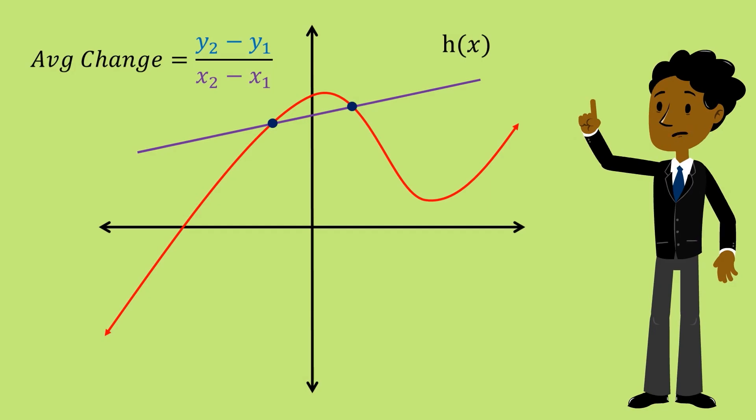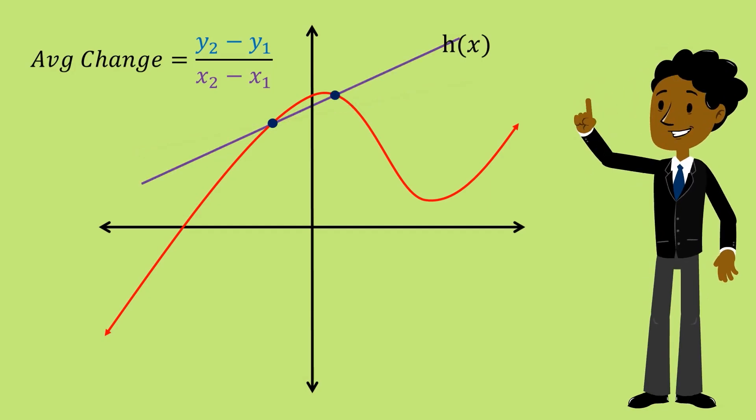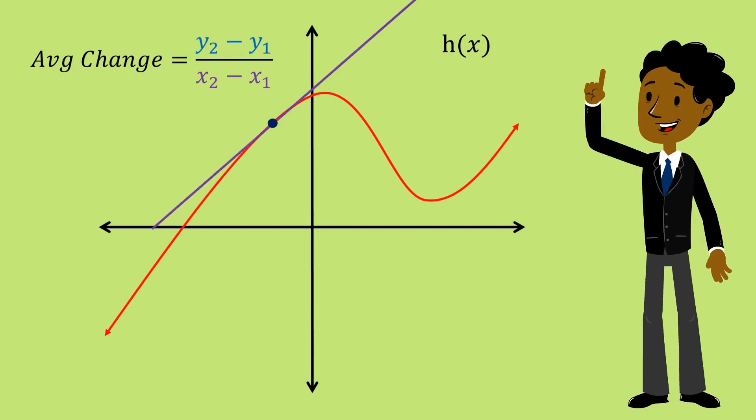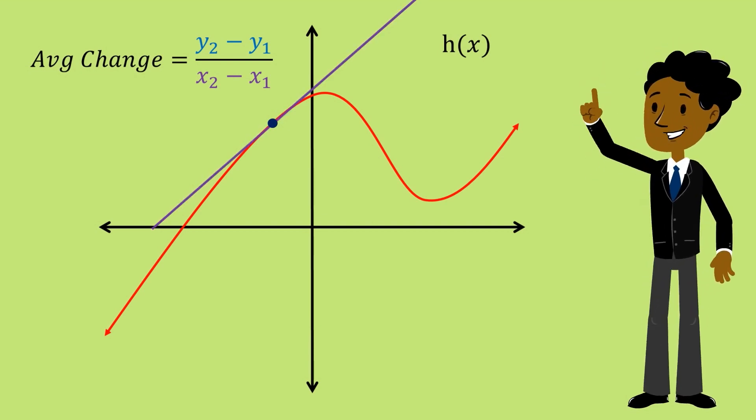Now rather than stopping there we instead start moving the second point closer and closer. Each time we do this we can record the new value for the average rate between them. Our hope is that as we find these new values they will begin to get closer and possibly settle on some specific value.